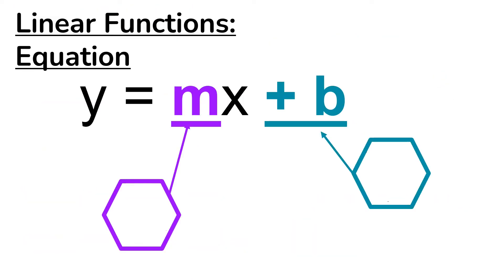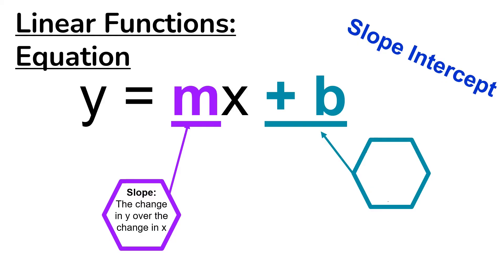The first type of function we're going to look at is the linear function. Hopefully you recall what form this equation is in — this is slope-intercept form: y = mx + b. The m stands for your slope, which is the change in your y-value over the change in your x-value.